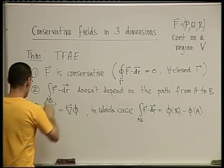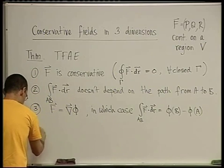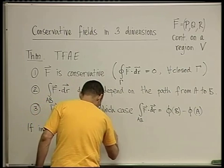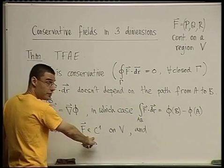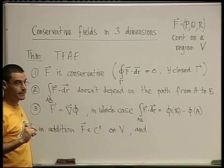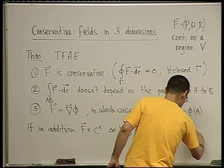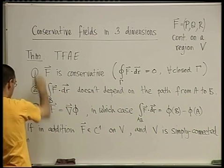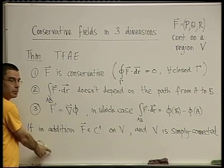Now comes the difference. These first three are equivalent under the stated requirements only. If, in addition, F is C1 on V — a slightly stronger requirement on the field — and V is simply connected, then the following three are also equivalent to Condition 4, which we still have to determine.